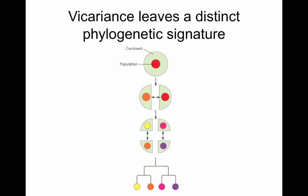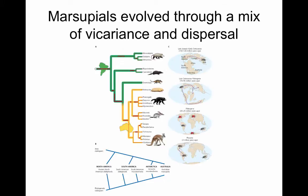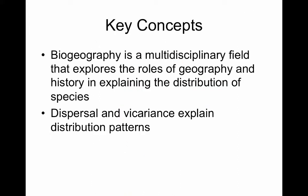We covered vicariance in our speciation class, but it's worth reviewing how it leaves a distinct phylogenetic signal. If we look at marsupials — pouch-bearing mammals — we see that their speciation patterns are a mix of vicariance and dispersal across the southern continents of the world, and then recolonization of North America from South America. Biogeography is a multidisciplinary part of evolution and ecology that explains the distribution of species through history, dispersal, and vicariance.